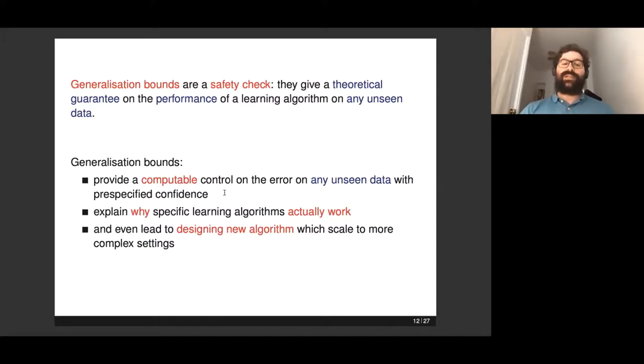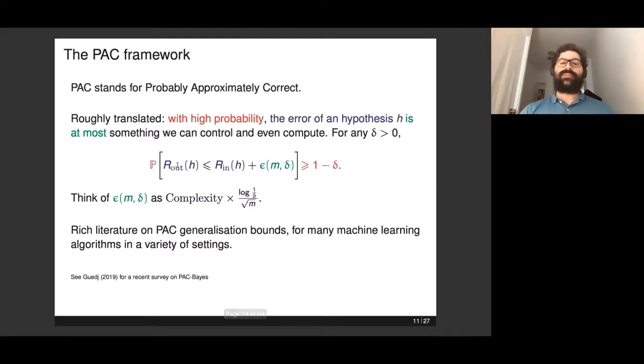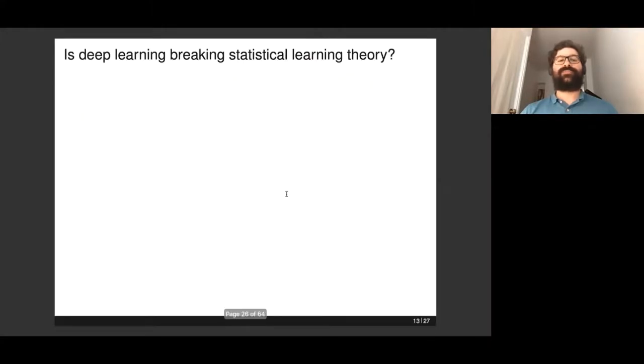The last claim, not the least, is that it could lead to designing new algorithms. In this particular bound, you could remark that H is left unspecified. If this holds for any H, this gives you a very elegant and principled way of deriving new algorithms. How do you do that? You simply minimize the right-hand side of that bound with respect to H. This gives you an H star which minimizes the right-hand side of the bound. You're basically ensuring that for this particular H star you're going to build, this bound is as tight as it could be. That's kind of a holy grail in machine learning.